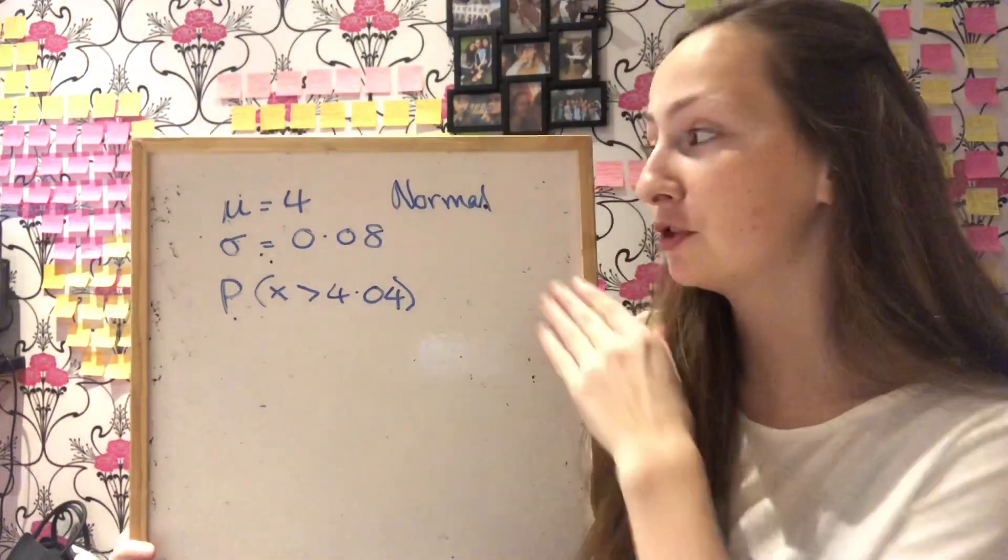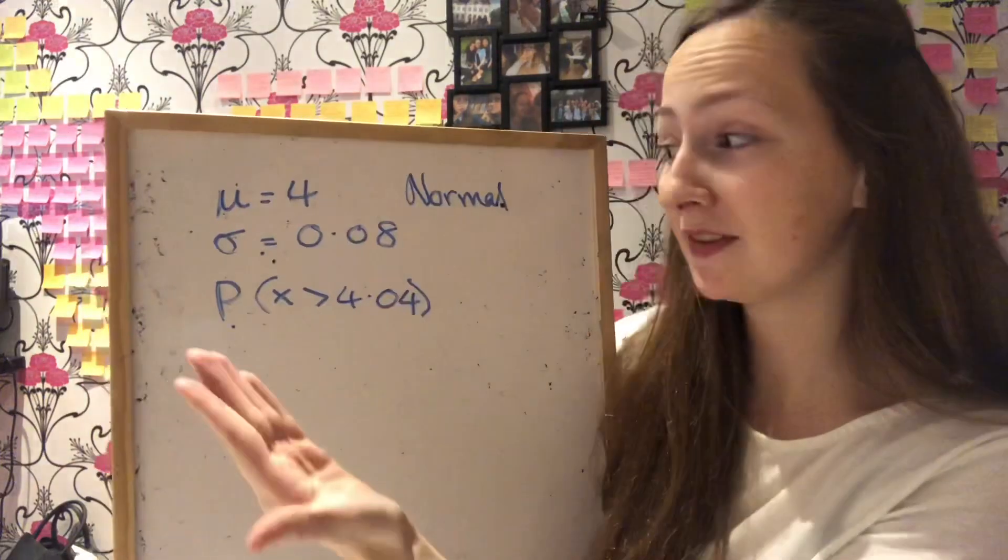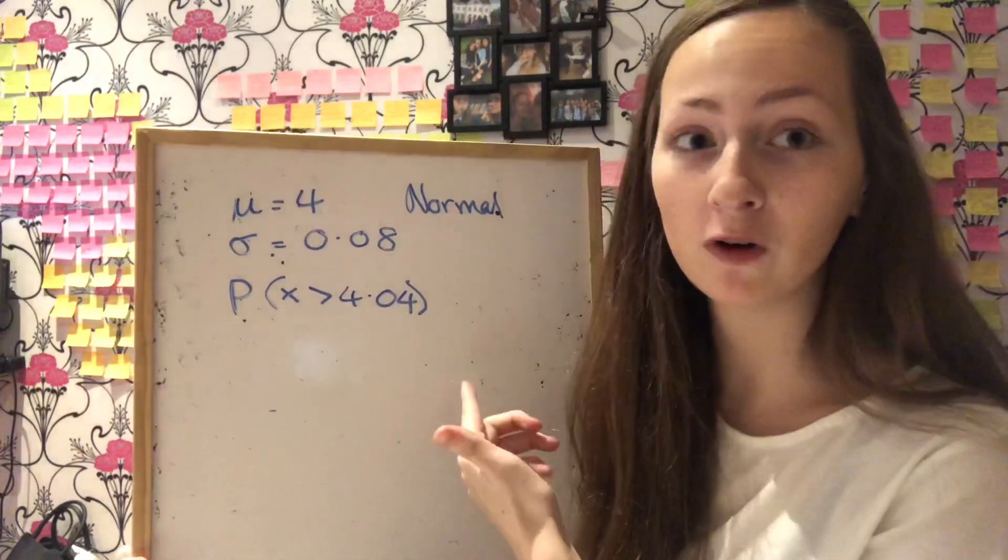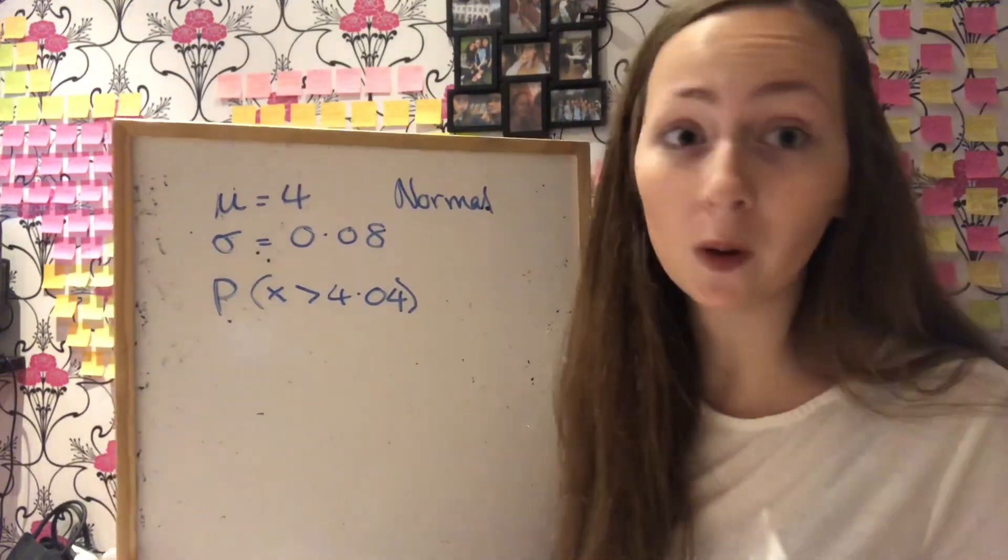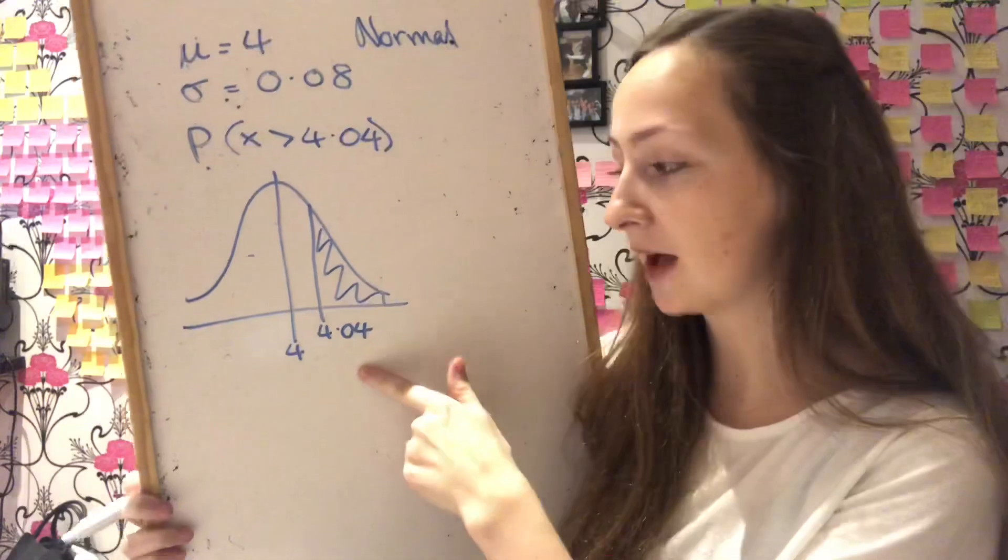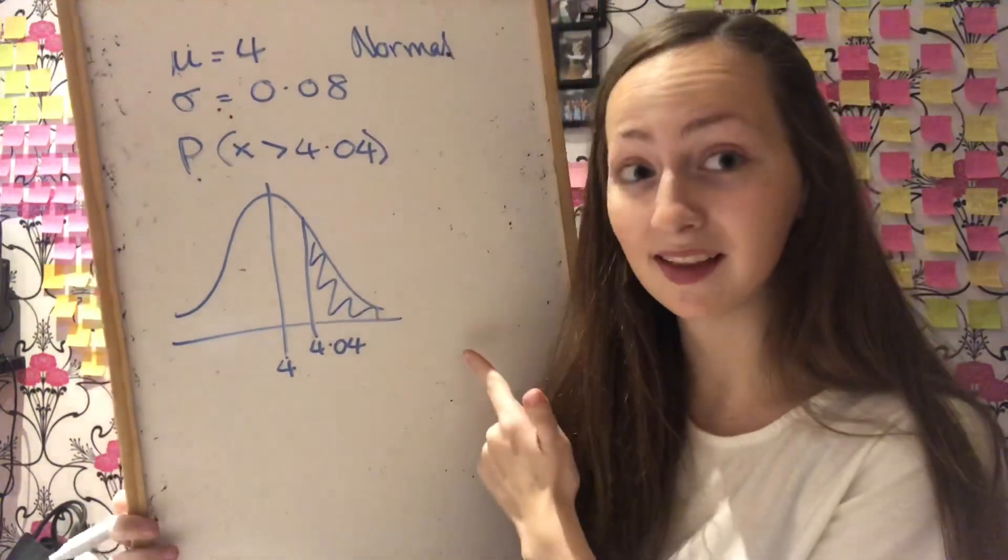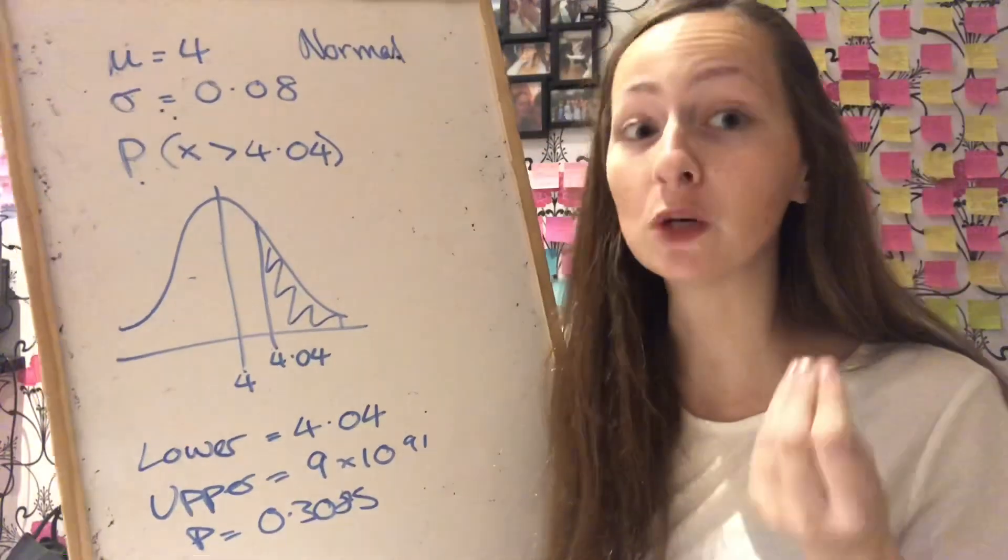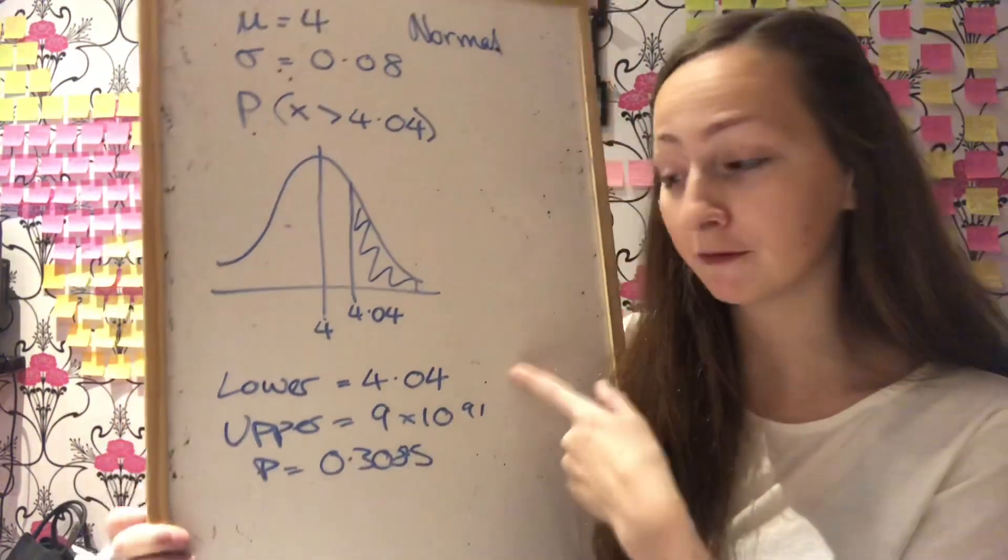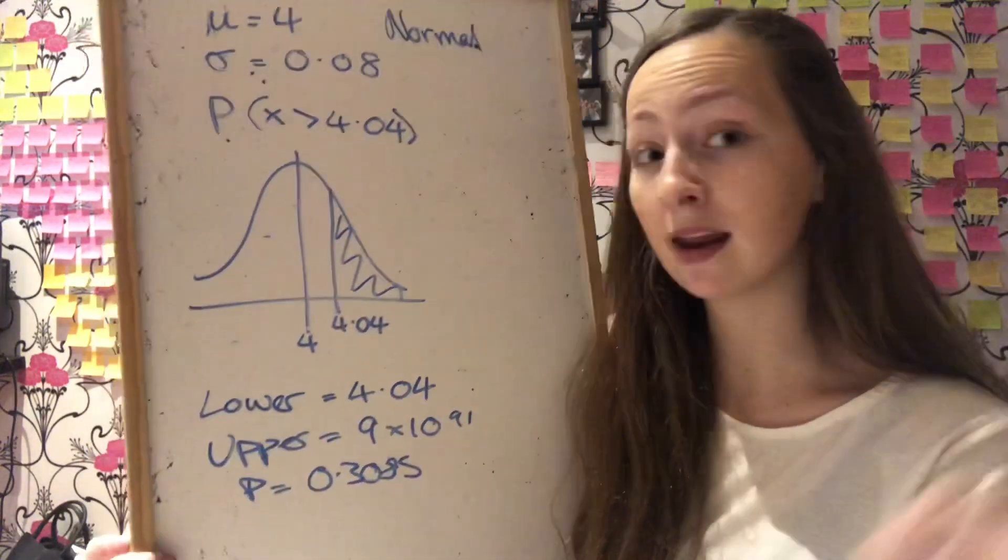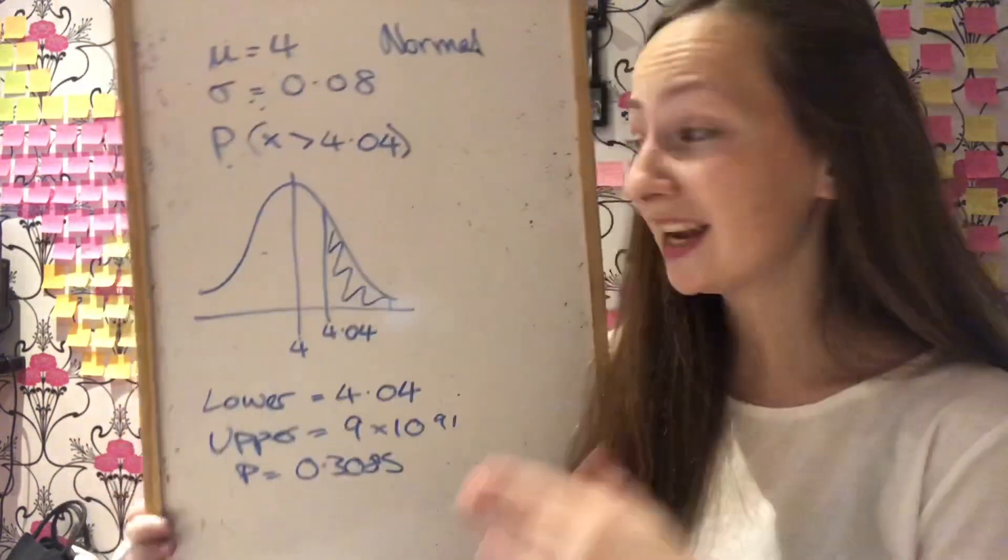Okay then say we've got a different question which is referring to the normal distribution where the mean is 4, the standard deviation is 0.08. You're asking us the question of the probability of finding one item that is greater than 4.04 in weight for example. So it weighs more than 4.04. So the first thing we need to do is draw a diagram. So this is the diagram. We have 4 which is the mean. And then this is what we're looking to find, 4.04. And the probability that it's greater than that. Okay so because this is actually a continuous variable, weight and height and things like that are always continuous, because continuous means we can measure it to an infinite number of decimal places. So it's not discrete so we don't use continuity corrections. We say that the lower value is 4.04. And the upper value again infinite is 9 by 10 to the 91. Put that into your calculator and it will tell you that the probability is 0.3085.